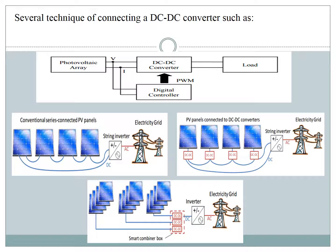In conclusion, conventional and popular maximum power point tracking methods cannot track the real maximum power point under shadow conditions because of the multiple local maxima that can exist on the PV characteristics curve. To overcome this tracking failure, a new maximum power point tracking method for improving efficiency is proposed. The proposed method is based on connecting a DC-to-DC converter to the array, and this approach reduces energy loss and improves the efficiency of the output power of the photovoltaic array.